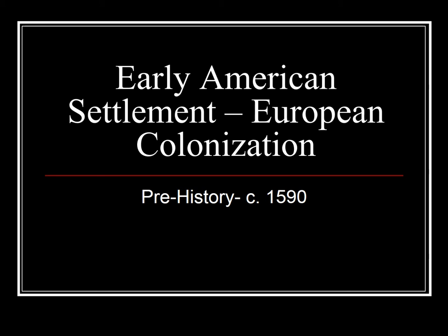We're going to be looking at the people of Mesoamerica first — the Olmec, the Maya, and the Aztec — located in what we would now call Central Mexico and Honduras. Then we'll look at North American civilizations. From the outset, it's important to note that the Mesoamerican civilizations were by far more advanced socially, politically, religiously, and agriculturally than the North American tribes typically associated with U.S. history.